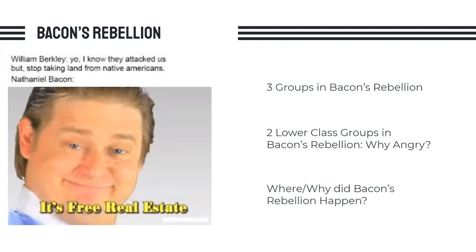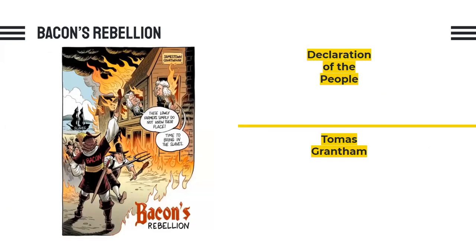Bacon drew up this big document — his Declaration of the People — to explain his grievances against the colonial elite. It kind of sounds similar to the Declaration of Independence, which we'll actually compare at a later lesson. This Declaration of the People blended the frontiersmen's hatred of the Natives with the common people's hatred of the elites, combining them into a document that was able to unite everyone.